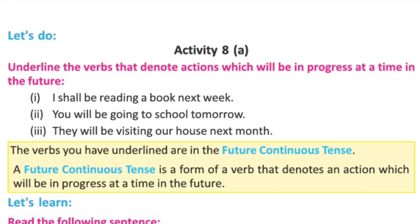Activity 8a: Underline the future continuous tense. Examples: 'I shall be reading a book next week' — shall be reading. 'You will be going to school tomorrow' — will be going. 'They will be visiting our house next month' — will be visiting.